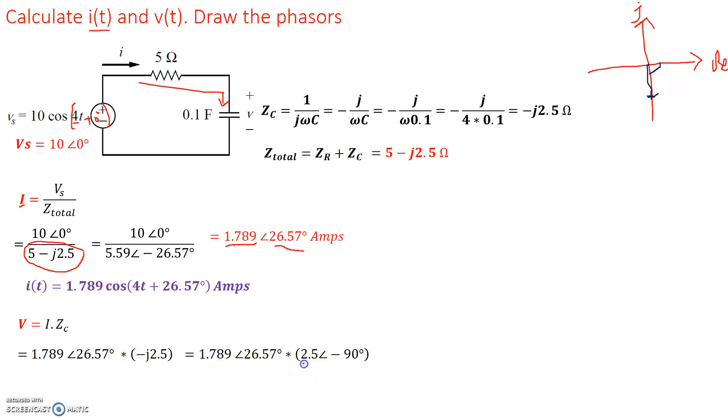Now when phasors multiply, you basically multiply the amplitudes, 1.789 times 2.5 will give us 4.47. And the angles will add up, so these angles will basically add up. So 26.57 plus -90 is -63.43. So we get 4.47 as the magnitude and -63.43 as the phase angle of the voltage across the capacitor.